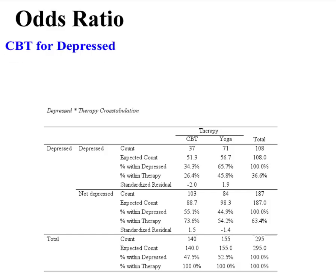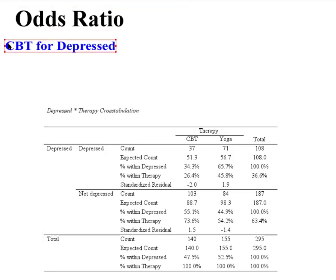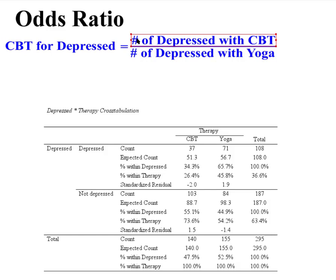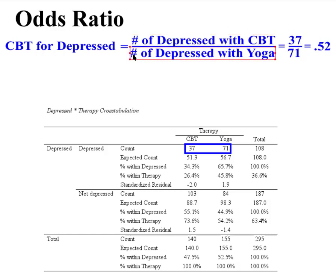It's best if I just show you. We're going to look at two separate odds ratios: CBT for depressed and CBT for not depressed. For the depressed group, we take the number of depressed using CBT — that's 37 — divided by the number of depressed using yoga — that's 71 — and turn it into a decimal. It looks like the depressed people using CBT are roughly half as many as the depressed people using yoga. So more depressed people are using yoga — not a good sign.